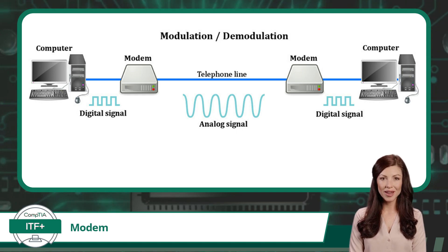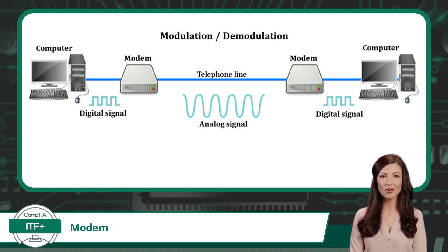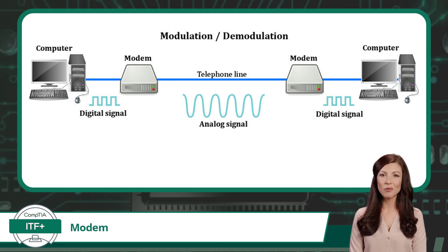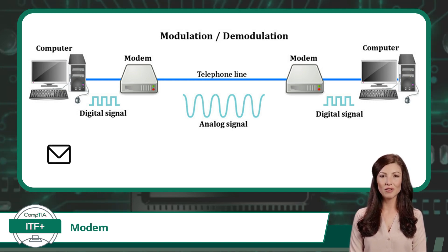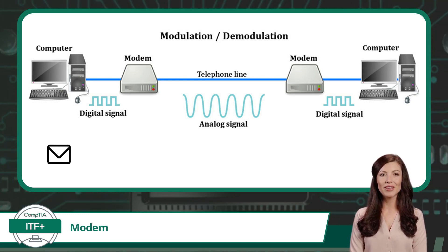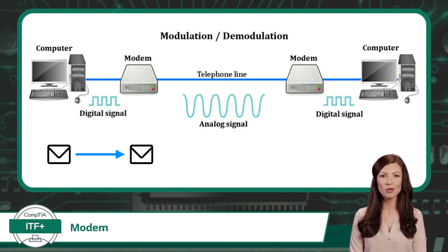Using the image behind me, I will walk you through the process of sending data from one computing device to another computing device across an internet service provider's network — in this case, a telephone network such as dial-up or DSL. On the far left, we have a workstation that will be sending a data packet. The network interface card on the workstation will send out a digital signal comprised of binary digits. Here, the digital signal will be received by the modem on the left, and the modem will perform a process called signal modulation.